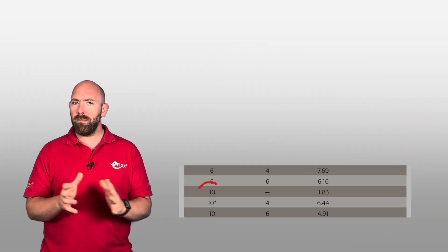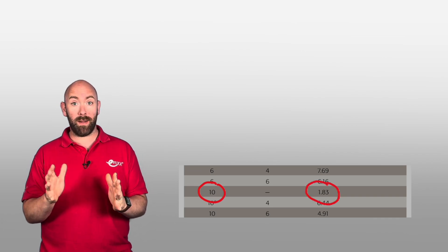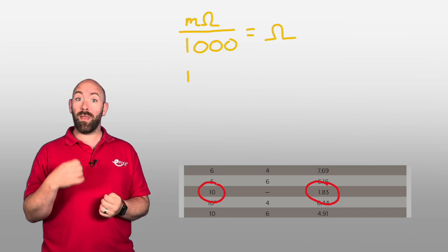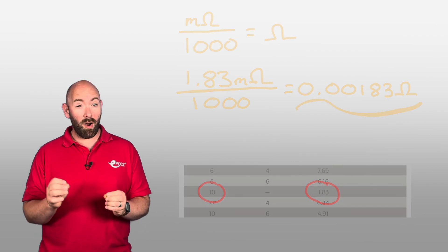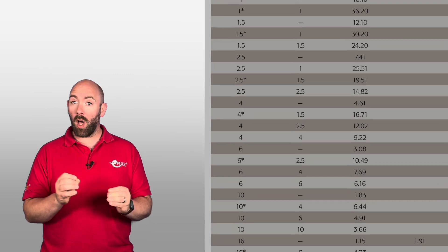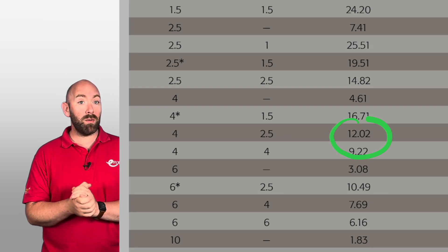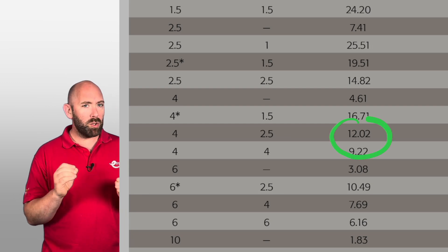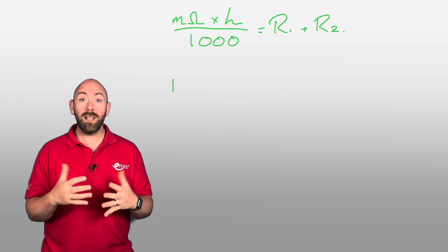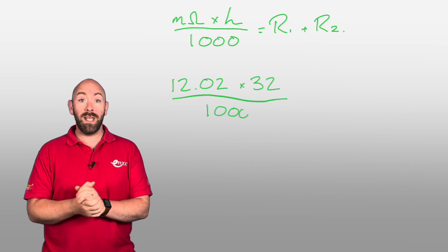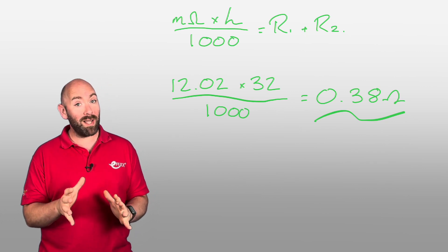For example, this 10 millimetre squared cable has a resistance of 1.83 milliohms per metre. If I divide this by a thousand — as we have a thousand milliohms to the ohm — it gives a value of 0.00183 ohms. For our circuit, a 4 millimetre line conductor with a 2.5 millimetre squared protective conductor has a resistance of 12.02 milliohms per metre. We multiply this by the length of 32 metres, then divide by a thousand, giving us an answer of 0.38 ohms — our expected R1 plus R2.